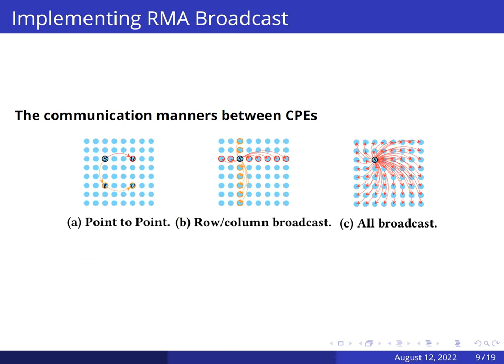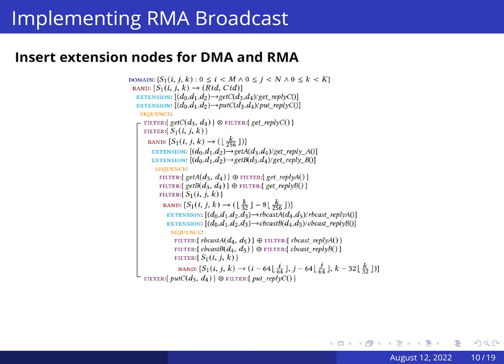The next step of our approach is implementing RMA broadcast. The latest Sunway processor provides three remote memory access manners: point-to-point, row and column broadcast, and all-broadcast manner. The RMA interfaces are similar to the DMA interfaces. And the affine relation of the extension node of RMA should be inserted in schedule tree, and the constraints of extension node should imply the shape of the tile delivered by RMA. The schedule tree is shown below. By inserting RMA extension node, we are automatically implementing data communication within the compute processing elements mesh.